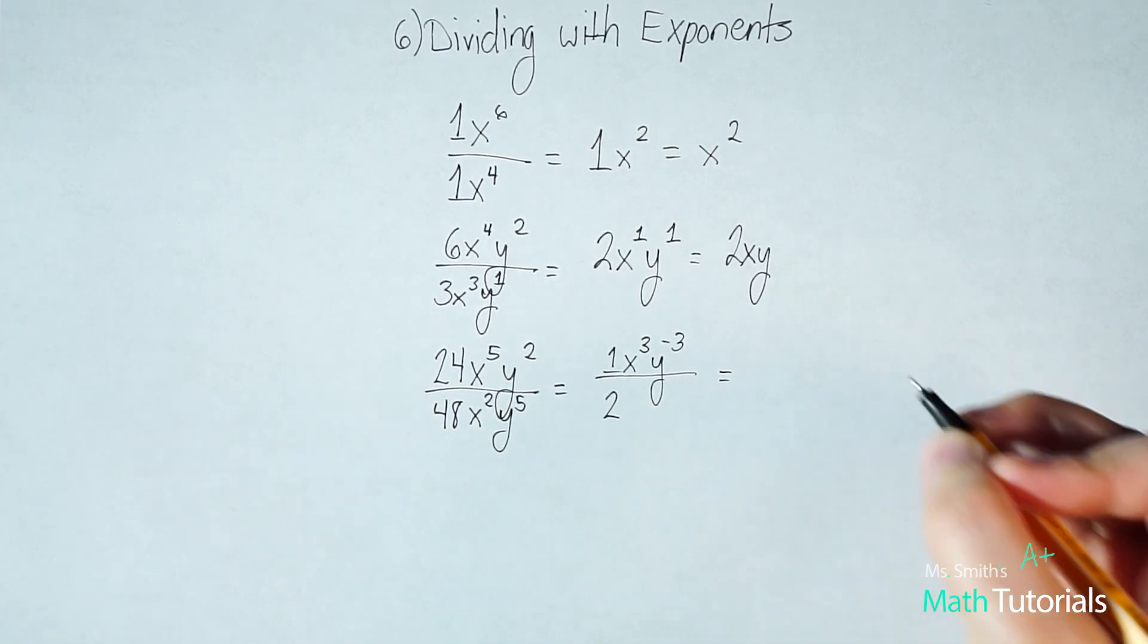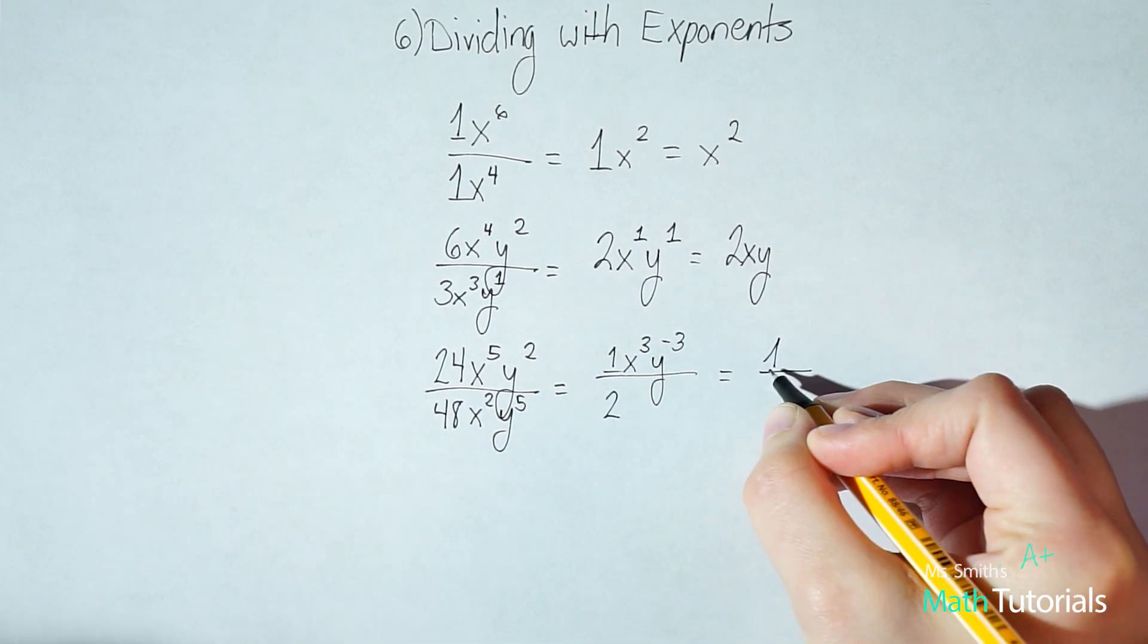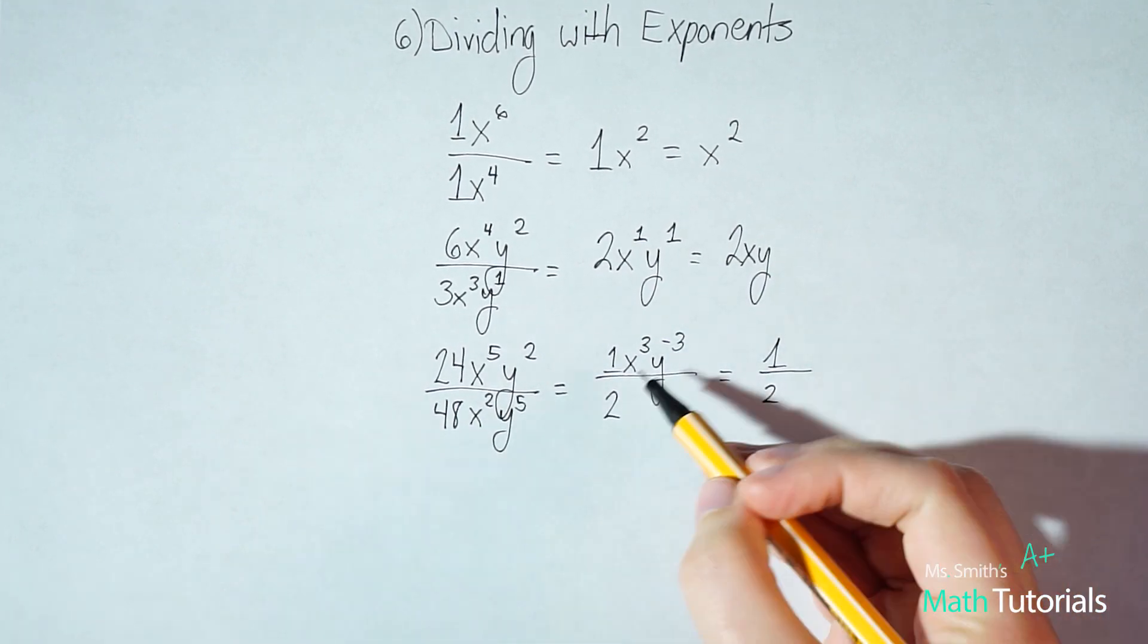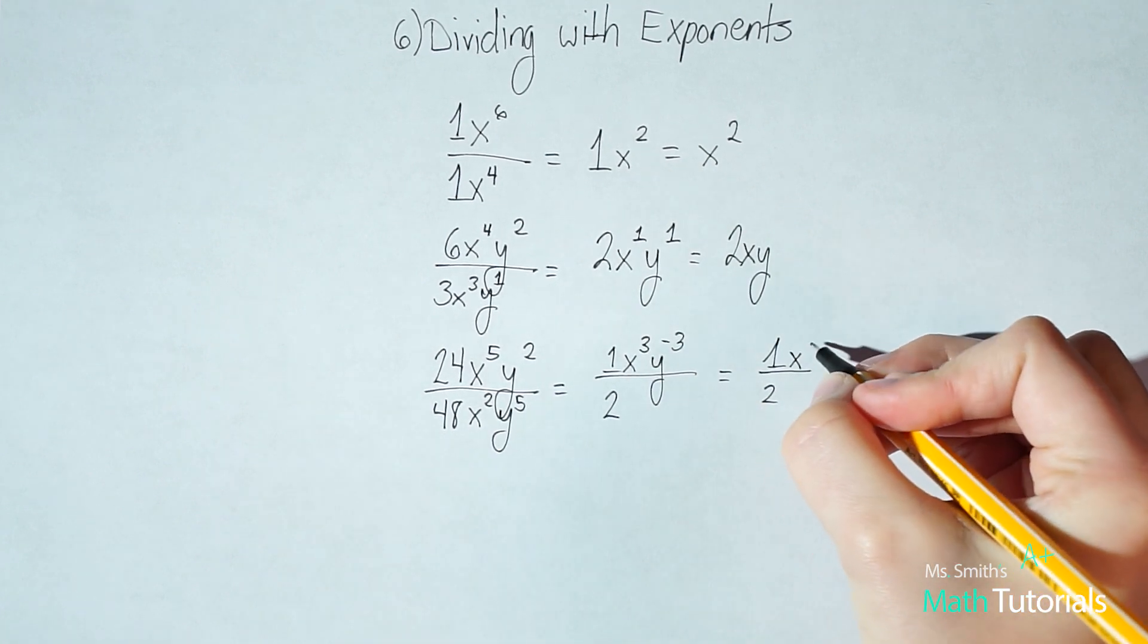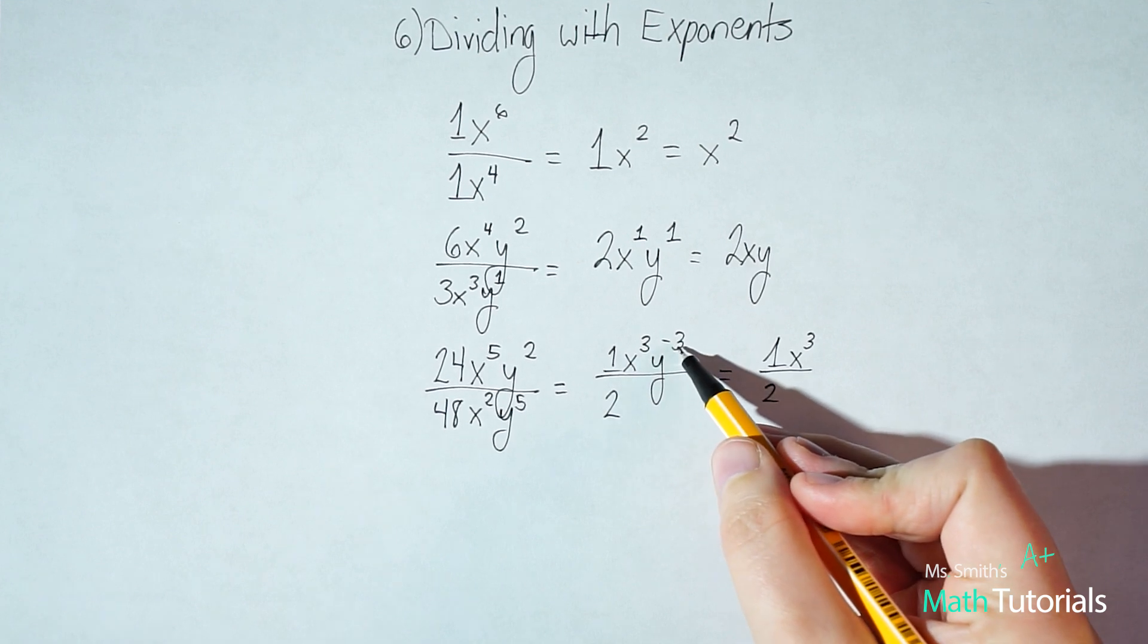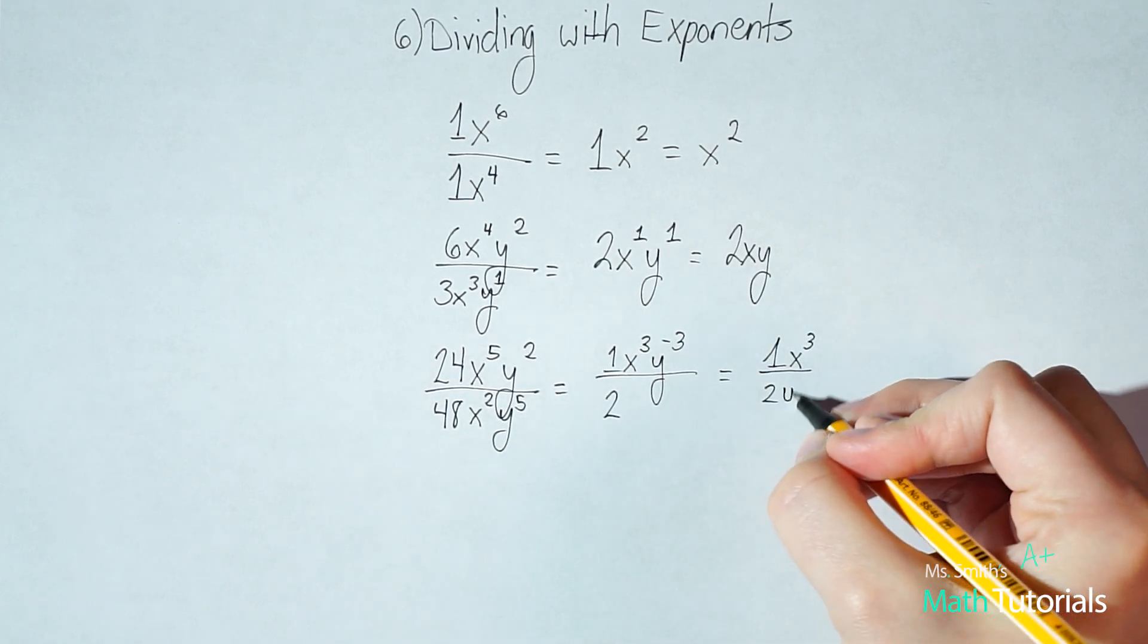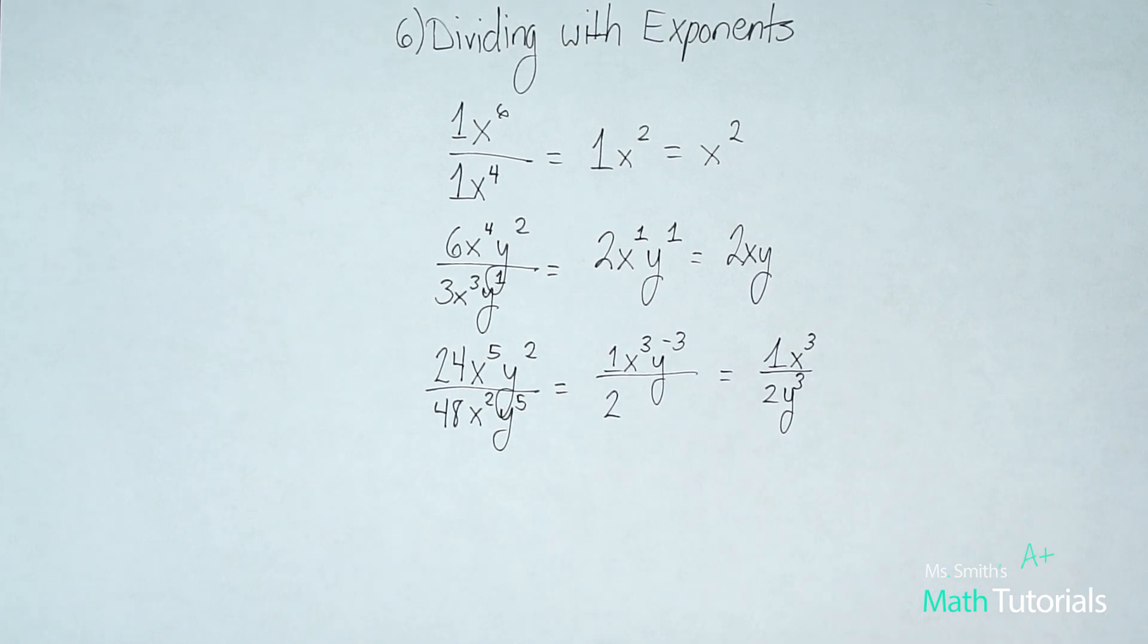So we need to rewrite this without that negative exponent. This is where rule number five comes in handy. So our one half would stay the same. And then our x third, that has a positive exponent. So that will stay up top. That does not need to move. But my y to the negative third, I've got to cross the line, change the sign with that so that it's no longer negative three. Now it's y to the positive third, y positive cubed.